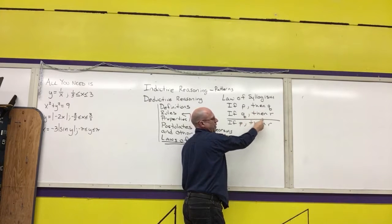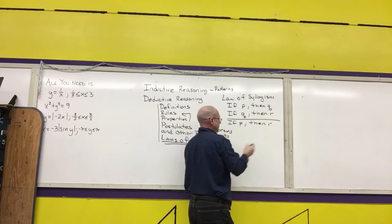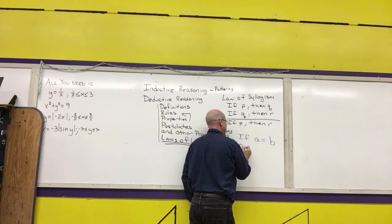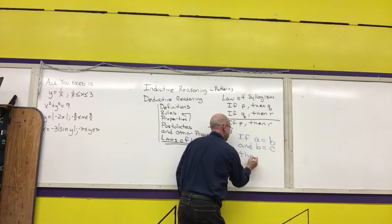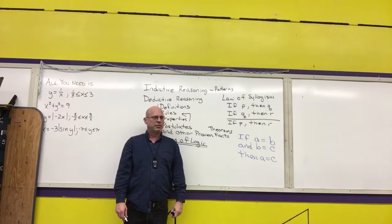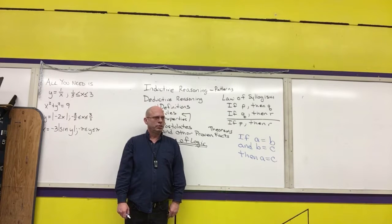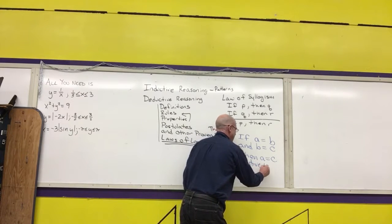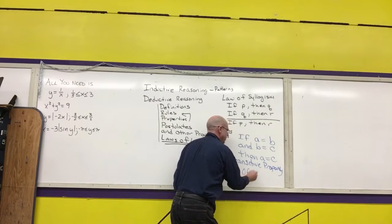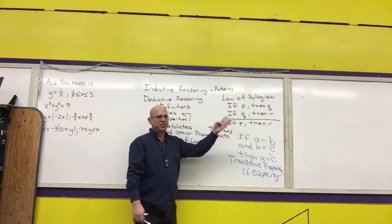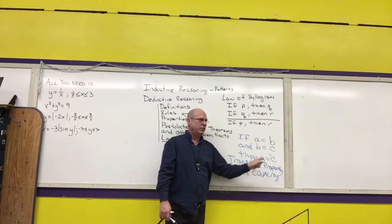So there is a similar property in arithmetic. That similar property looks like this. If A equals B and B equals C, then A equals C. Does anybody remember what the name of that property was in arithmetic? It starts with the letter T. And they go choo choo. Transitive property. And this one would be called the transitive property of equality. And this should make common sense to you. That's why I said the law of syllogism is almost like common sense. If A equals B and B equals C, then A equals C.